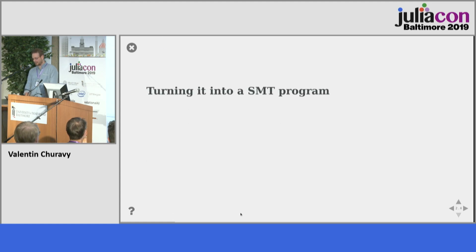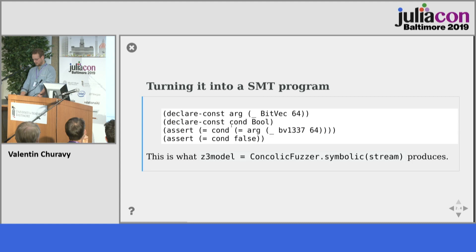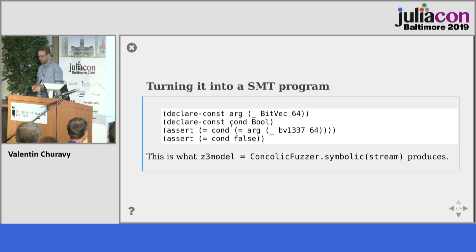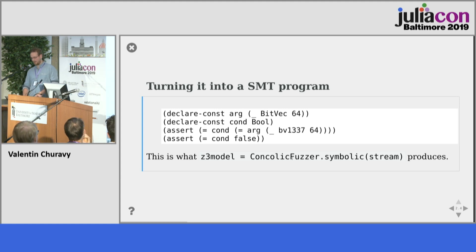If we want to turn this into an SMT program, this is what SMT programs look like — they are S-expressions. We are declaring arguments here with declare-constant, saying it's a constant of bit length 64, so it's a 64-bit integer. We declare a condition which is a boolean, and then we assert whether or not the condition holds — the bit vector 1337 encoded — and then we assert our condition.